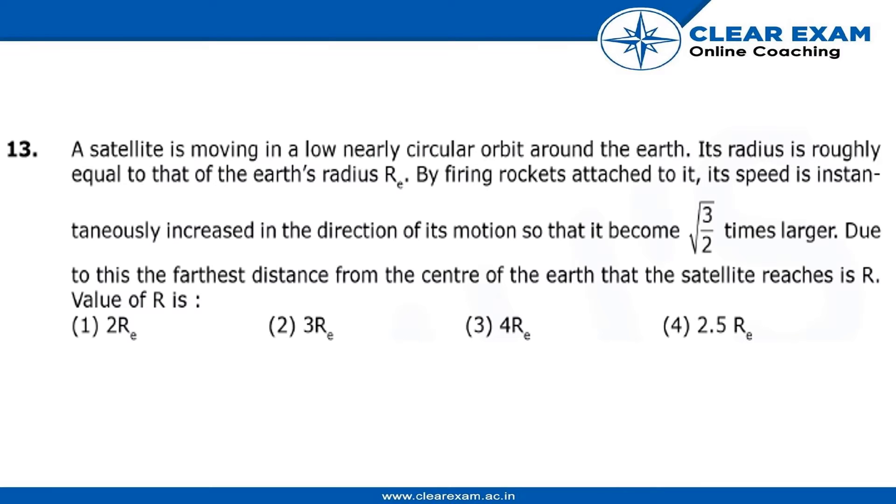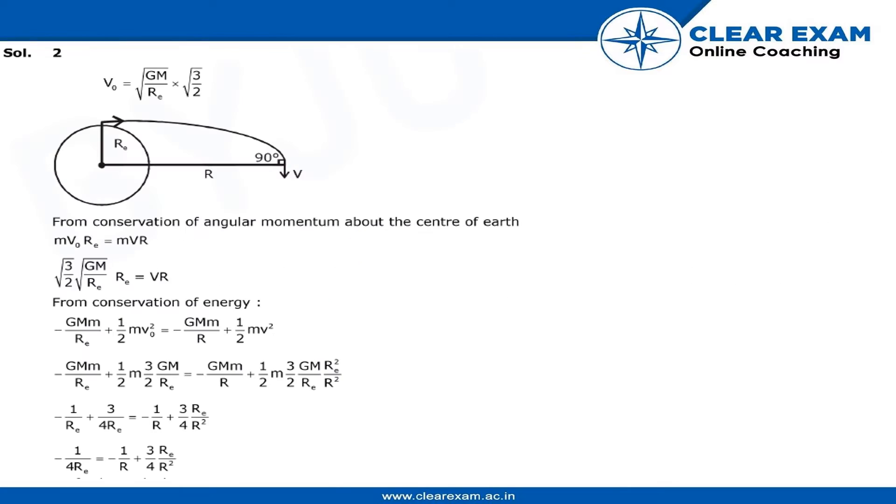3RE which is option 2, which is the correct answer. So from the gravitational chapter you have seen this formula: V0 is equal to under root GM by radius of earth, and it is given under root